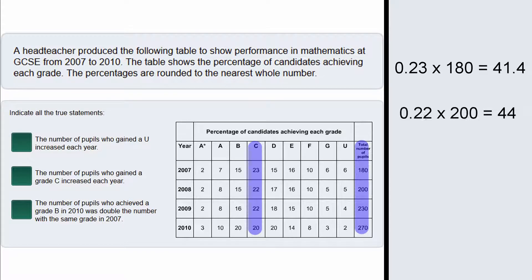In 2008 we are going to do 0.22 multiplied by 200 which gives us 44. So it has increased. In 2009 we are going to do 0.22 multiplied by 230 which gives us 50.6. Again it's an increase.